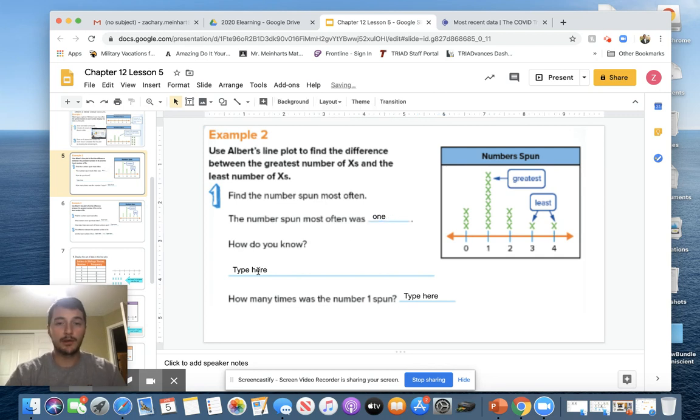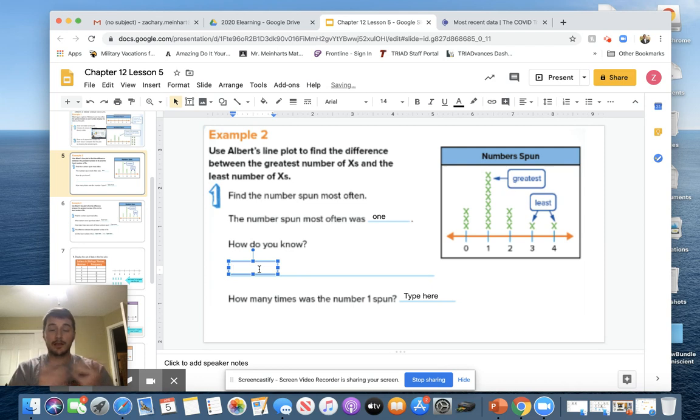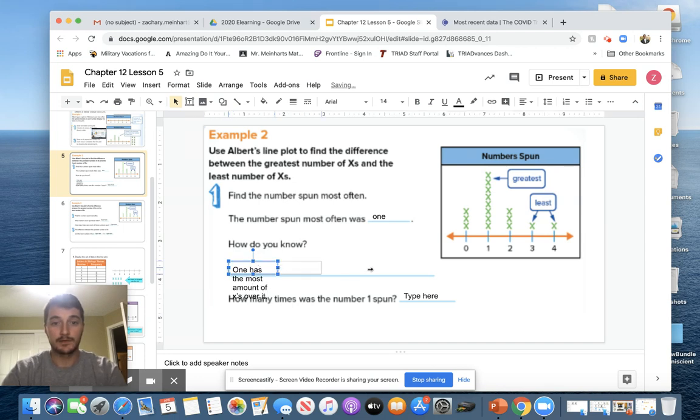And how do we know this? Well, I want you to answer it how you want to answer it. I would answer it by saying simply that one has the most amount of X's over it. And let's stretch this out.